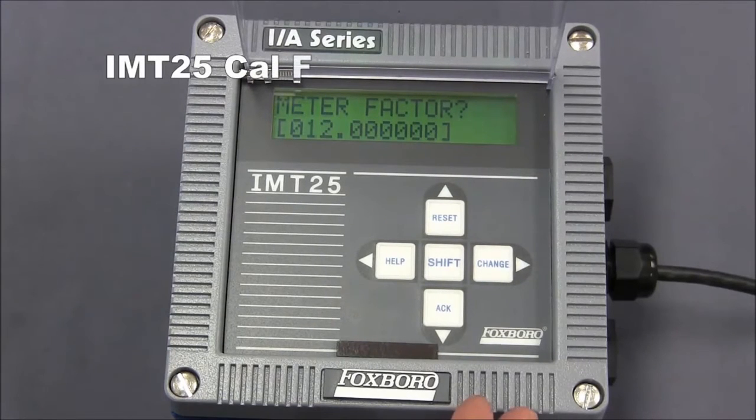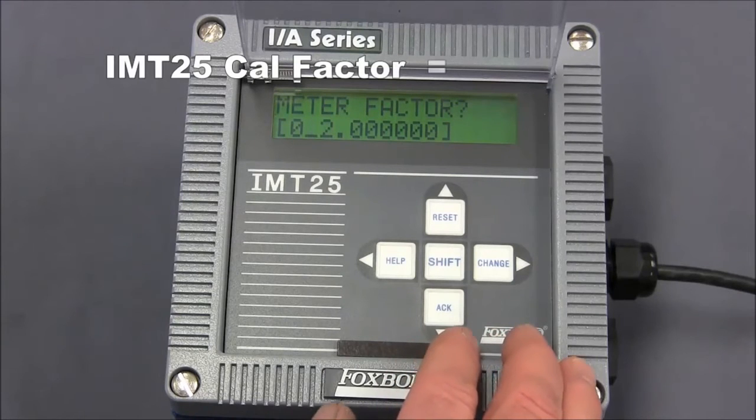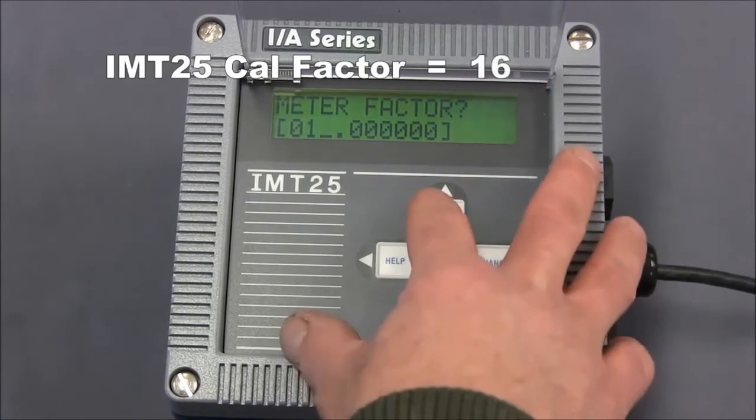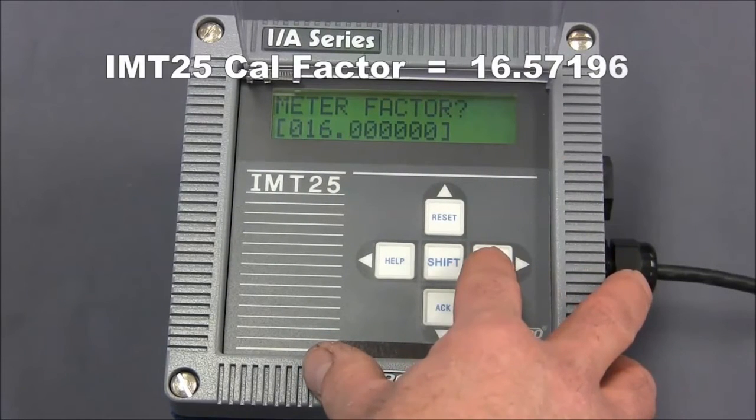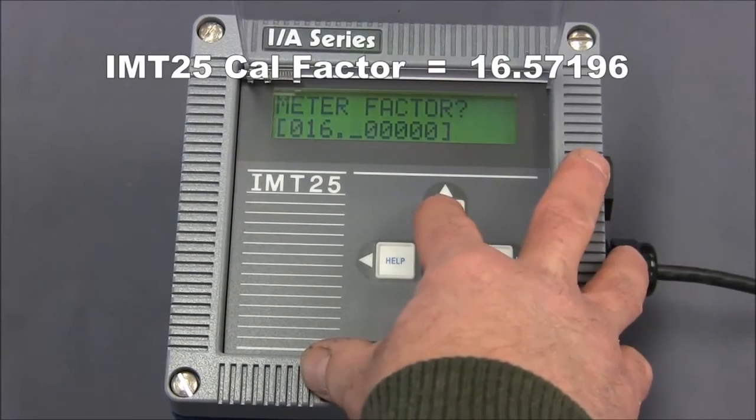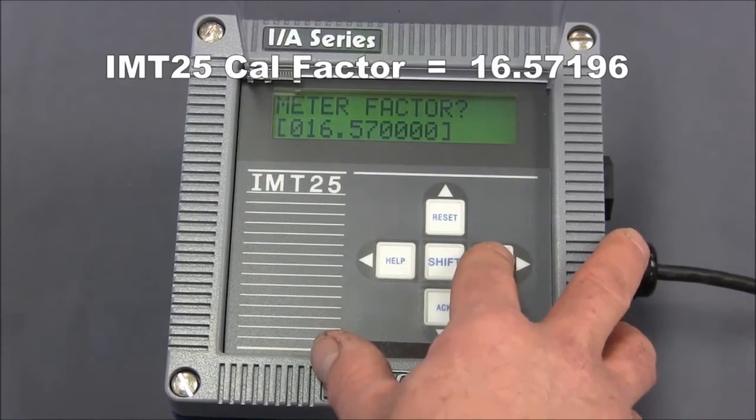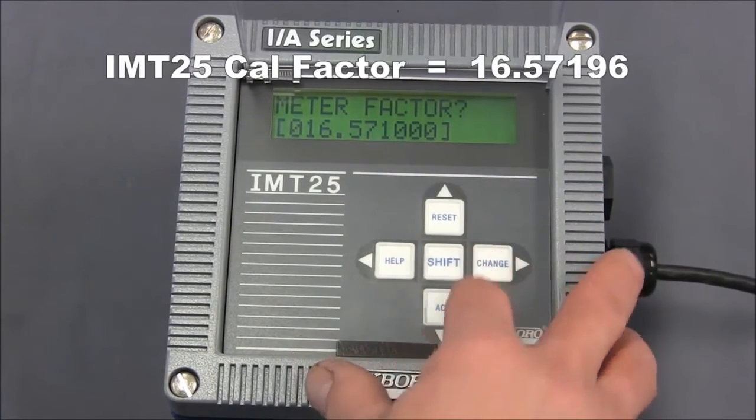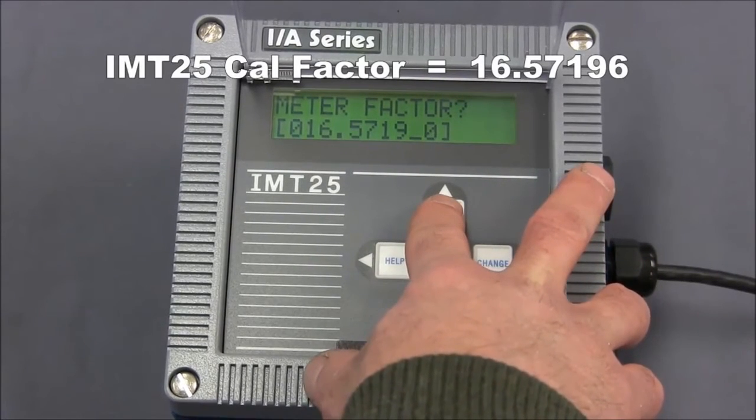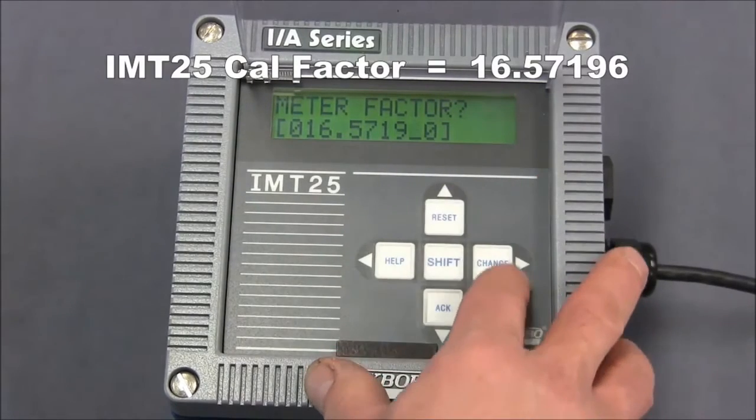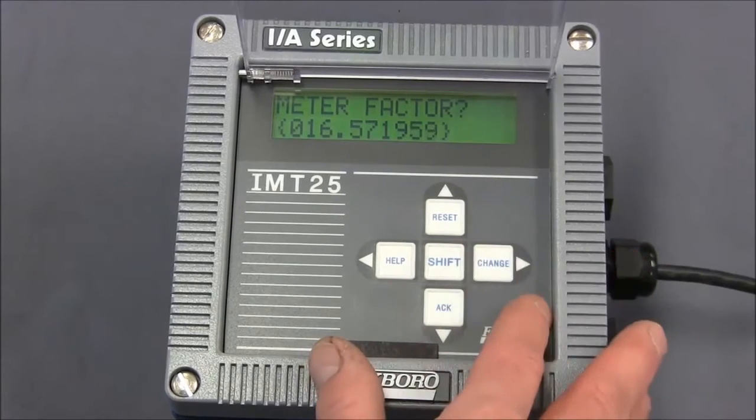Once the transmitter is in edit mode by the left bracket flashing, you would now use the right arrow key or the change key to move along to each of the different digits and change it to the meter factor that's actually stamped onto your flow tube's data plate. In this case, the IMT25 calibration factor is 16.57196. So we'll move along and change this to 16, using the up and down arrow keys to change the numbers and the right arrow key to get to the different digits. We hit the right arrow again to get the right bracket flashing, and then finally we hit the right arrow one more time to lock that number in.